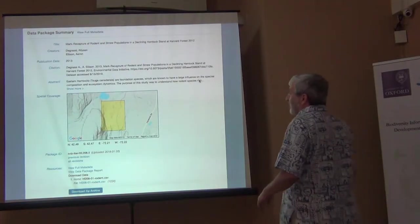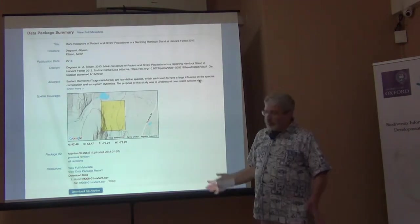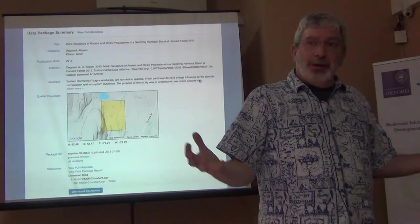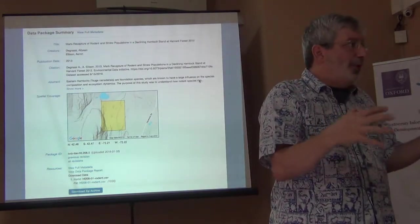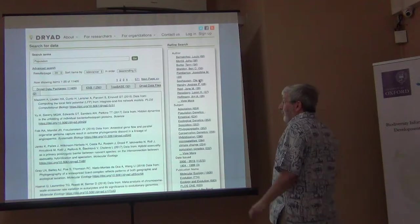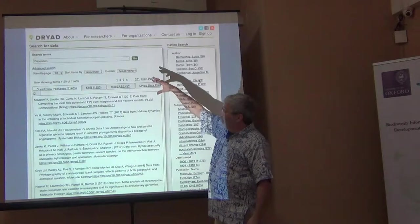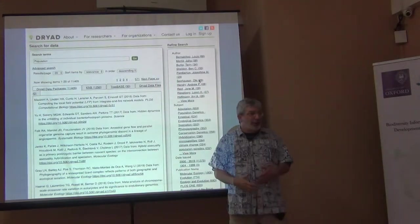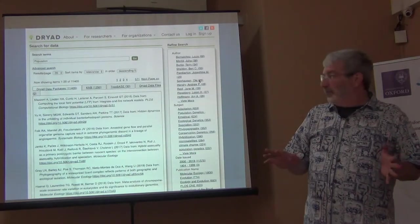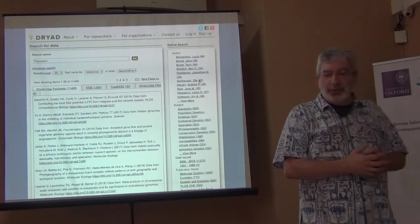The individual data packages show location and provide nice metadata, so the data are quite usable — but you're going to have a very difficult time putting them together across the range of a species. Another common repository for population data is called DRIAD, and again it contains heterogeneous datasets with no common format and no common language, making it a massive amount of work to merge different datasets.